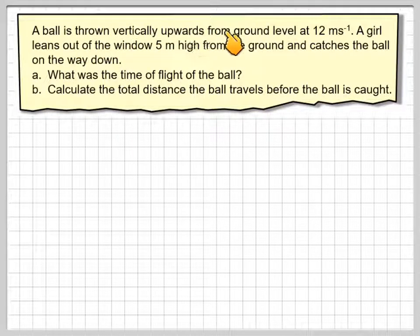A ball is thrown vertically upwards from ground level at 12m per second. A girl leans down on the window 5m high from the ground and catches the ball on the way down. What was the time of the flight of the ball? Calculate the total distance the ball travels before the ball is caught.